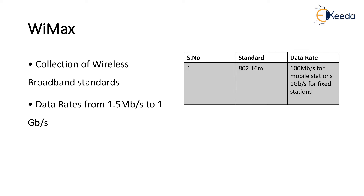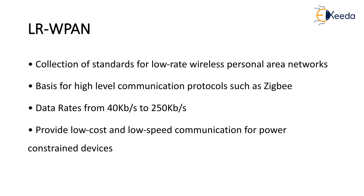Next, 802.15.4 is LR-WPAN — low-rate wireless personal area network. It is a collection of standards for low-rate, low-power wireless personal area networks. These standards form the basis for high-level communication protocols such as ZigBee. Data rates range from 40 Kbps to 250 Kbps per second, providing low-cost, low-speed communication for low-power constrained devices. Its specifications are also available on the IEEE website.